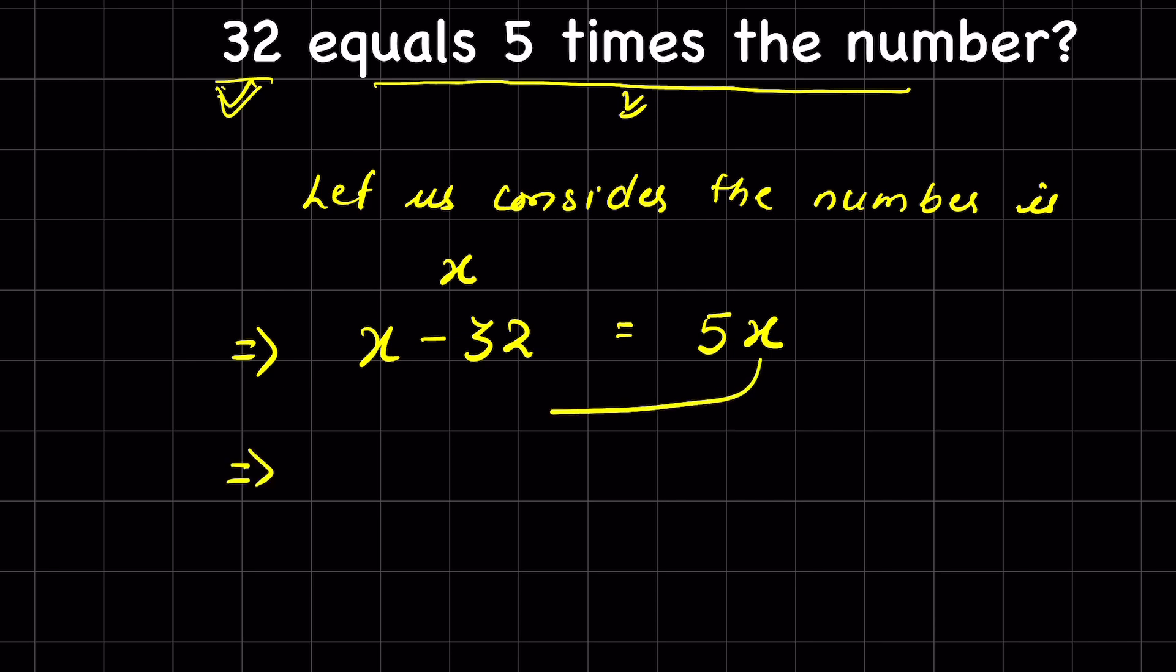Now we send 5x to the left hand side. The variables are on one side: x minus 5x. It's positive 5x, so it will be negative 5x. Then send minus 32 to the right hand side, so minus 32 will become positive 32.